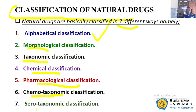Then lastly we have what we call the serotaxonomic classification. With the serotaxonomic, it will also be restricted to only plants. So basically there are seven ways in which we classify natural drugs.